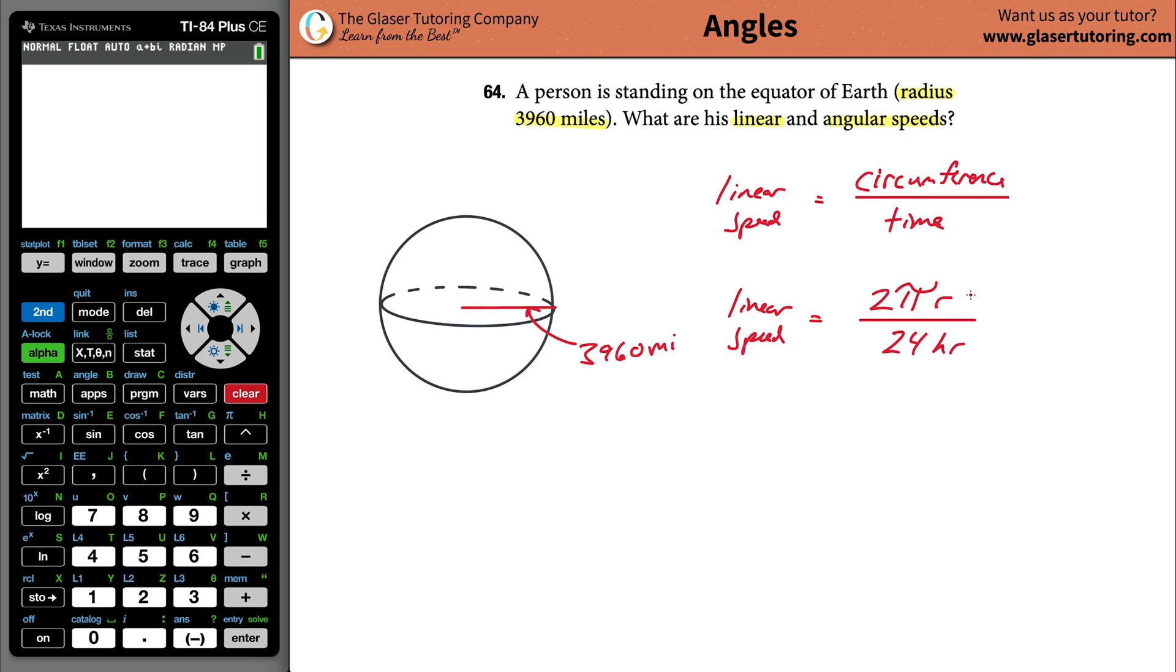Now all I'm going to do is just plug in for my r here. I'm going to plug in the value of the radius, 3960. Your linear speed here... you like my handwriting? I don't. So now plug it into the calculator: two times π, multiplied by 3960. You can hit enter if you want, you really don't need to.